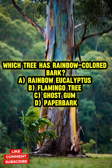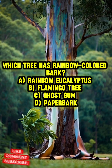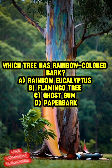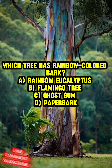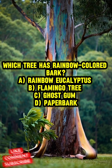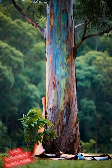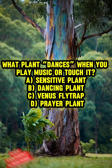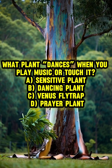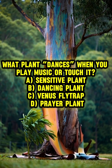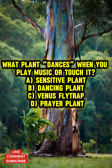Which tree has rainbow-colored bark? A) Rainbow eucalyptus, B) Flamingo tree, C) Ghost gum, D) Paper bark. Answer: A, rainbow eucalyptus.